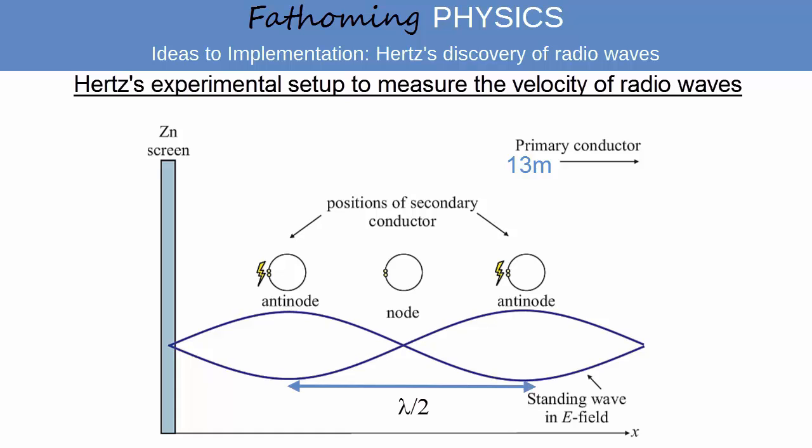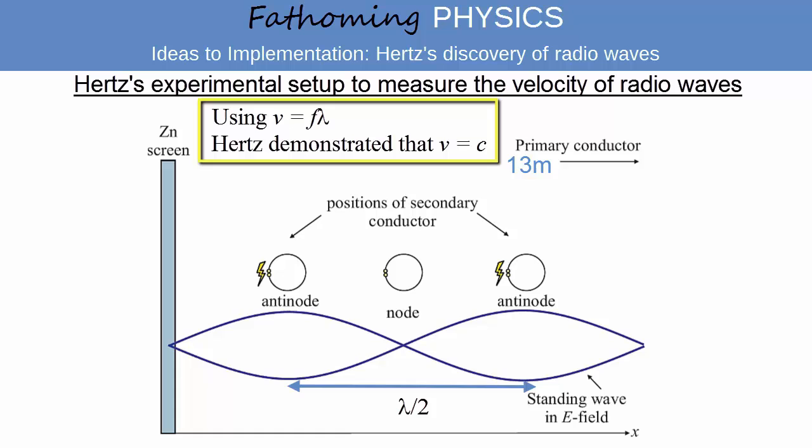Knowing the wavelength and knowing the frequency of the waves, Hertz could confirm that their velocity was that of visible light, and that the waves he was producing were in fact the electromagnetic waves predicted by Maxwell's equations.